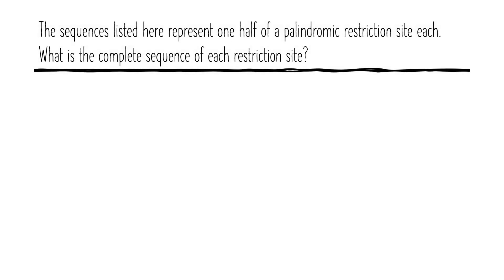In this question we are talking about palindromic regions and palindromic sequences. They are giving just a sequence, and instead of giving the entire palindromic region, they are giving just a half of the palindromic restriction site and asking you to complete the sequence.